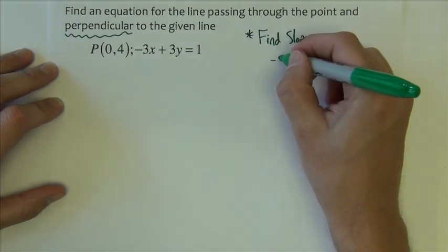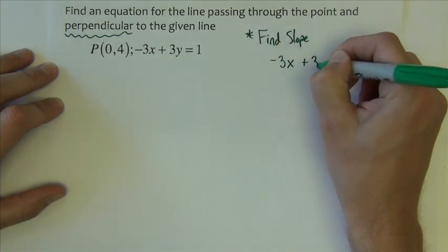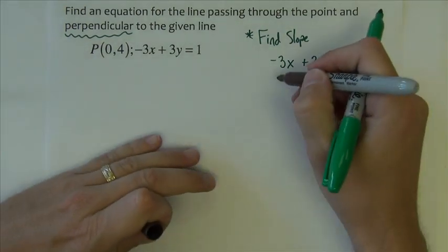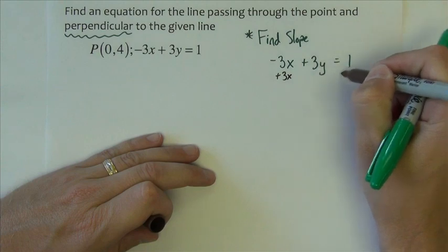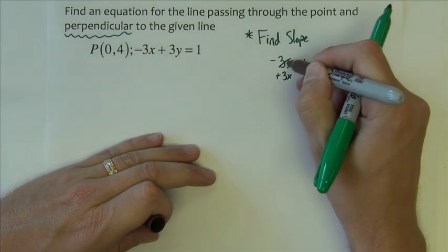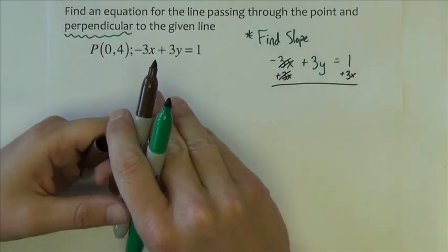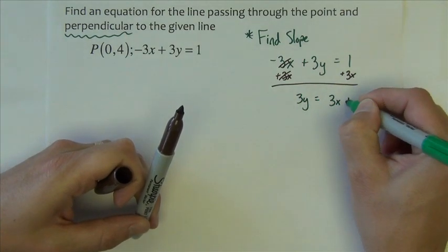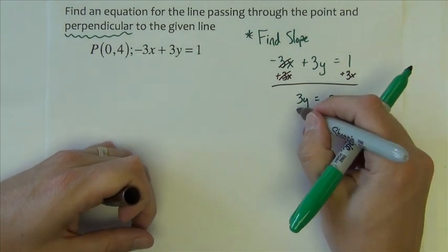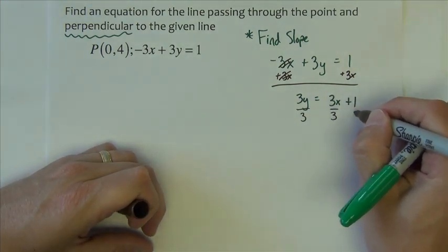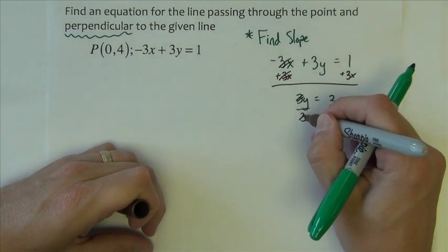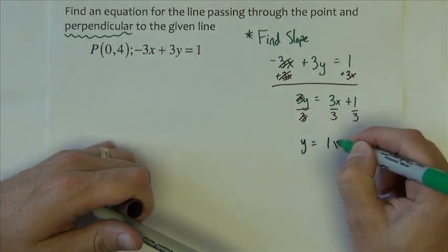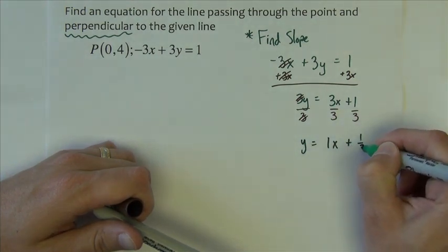Let's rewrite it over here. I'm going to begin by adding 3x to both sides, giving me 3y equals 3x plus 1, divided by 3, giving me y equals x plus 1 third.